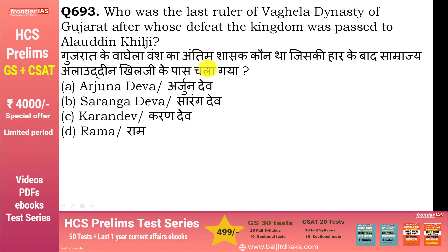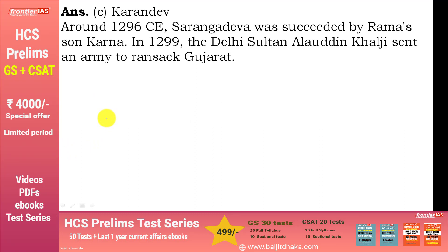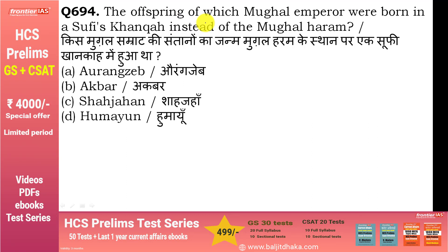गुजरात के वघेला वंश का अंतिम शासक कौन था जिसकी हार के बाद साम्राज्य अलाउद्दीन खिलजी के पास चला गया? — करण देव. Around 1296 में सारंगदेव के बाद रामासन करण बने, लेकिन 1299 में अलाउद्दीन खिलजी ने army भेजकर गुजरात पर कब्जा कर लिया.